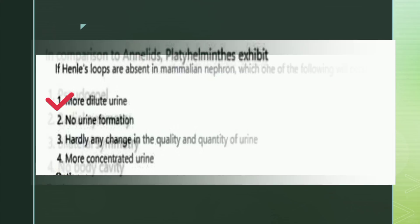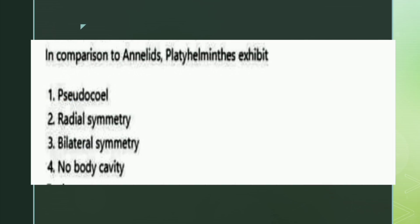The next question: in comparison to annelids, flatworms (platyhelminthes) exhibit what? The options are pseudocoelom, radial symmetry, bilateral symmetry, or no body cavity. The right answer is option four: no body cavity.